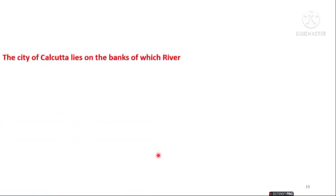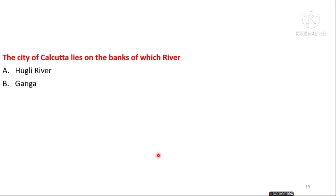The next question is: the city of Kolkata lies on the banks of which river? The options are Hooghly River, Ganga River, Narmada River, and Tapti River. The answer is option A — Kolkata lies on the banks of the Hooghly River.